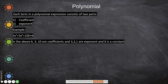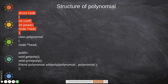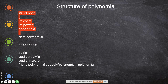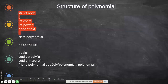We need to create a node in the linked list such that the information field consists of two things — the coefficient and the exponent — and the next field, as usual, points to the next node in the singly linked list. We declare a structure and a node of type structure, which consists of a coefficient, a power variable, and a pointer variable called 'next', which is of type node.